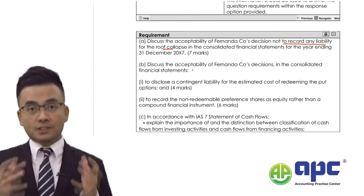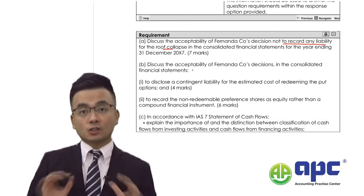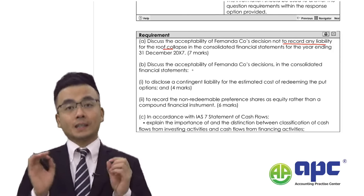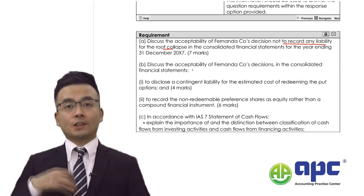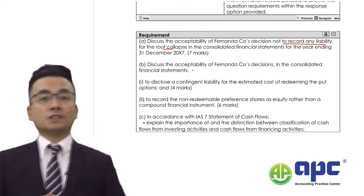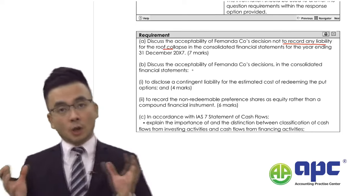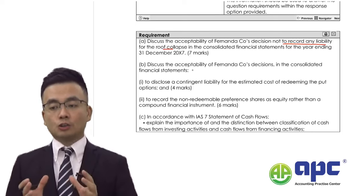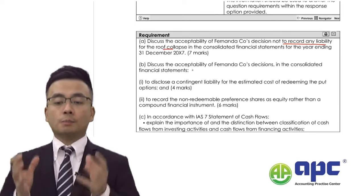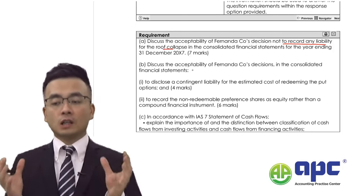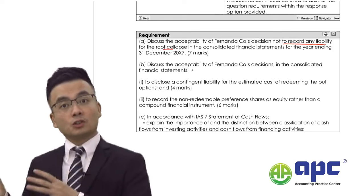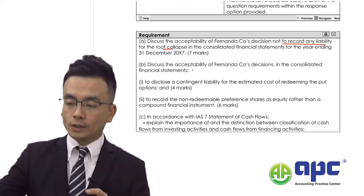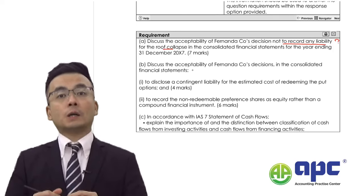We are given seven marks here. If any student is talking about the impairment of non-current assets according to IAS 36, there will be no marks for that, because the question specifically asks about the roof collapse and whether someone is suing the company, and whether or not we should record any liabilities.